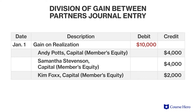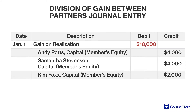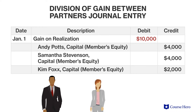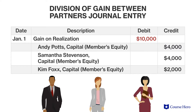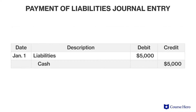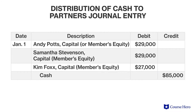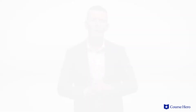The second entry, which involves the apportionment of the gain, reassigns the ten thousand dollar gain attributed to the partnership to each partner according to their distributive share. The third entry involves the payment of outstanding liabilities. The final journal entry involves the closing of each partner's capital account in exchange for full payment of the remaining assets — all remaining cash is paid out and each capital account is closed with a debit entry.